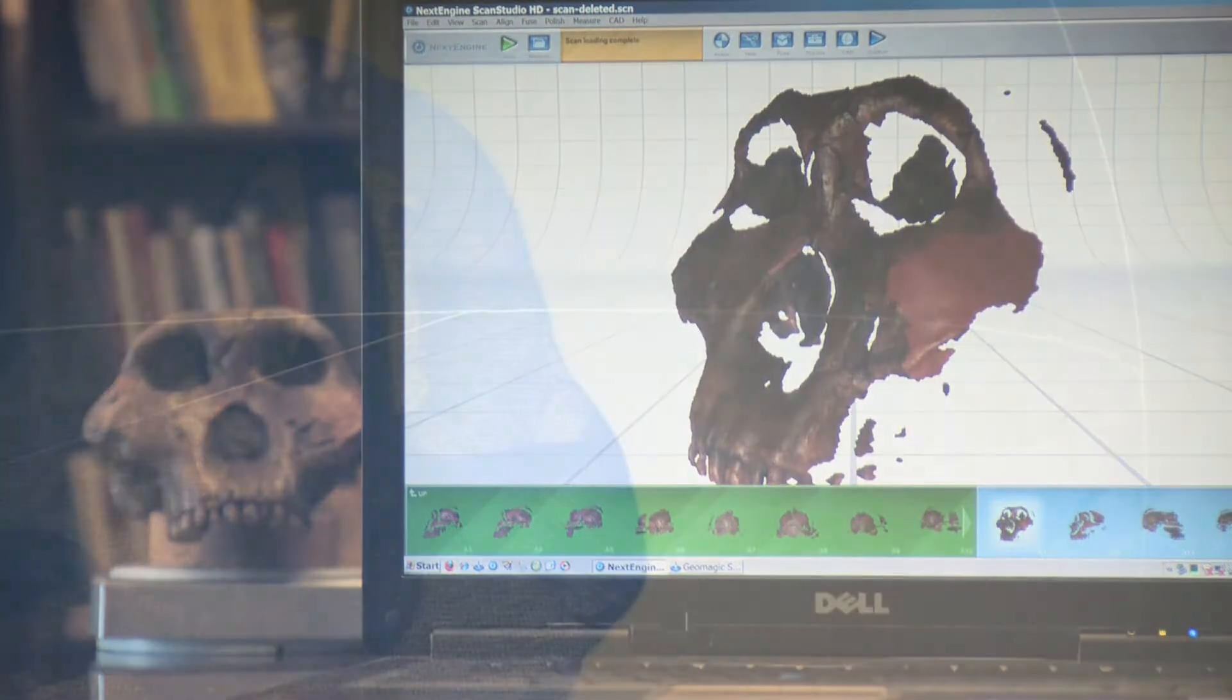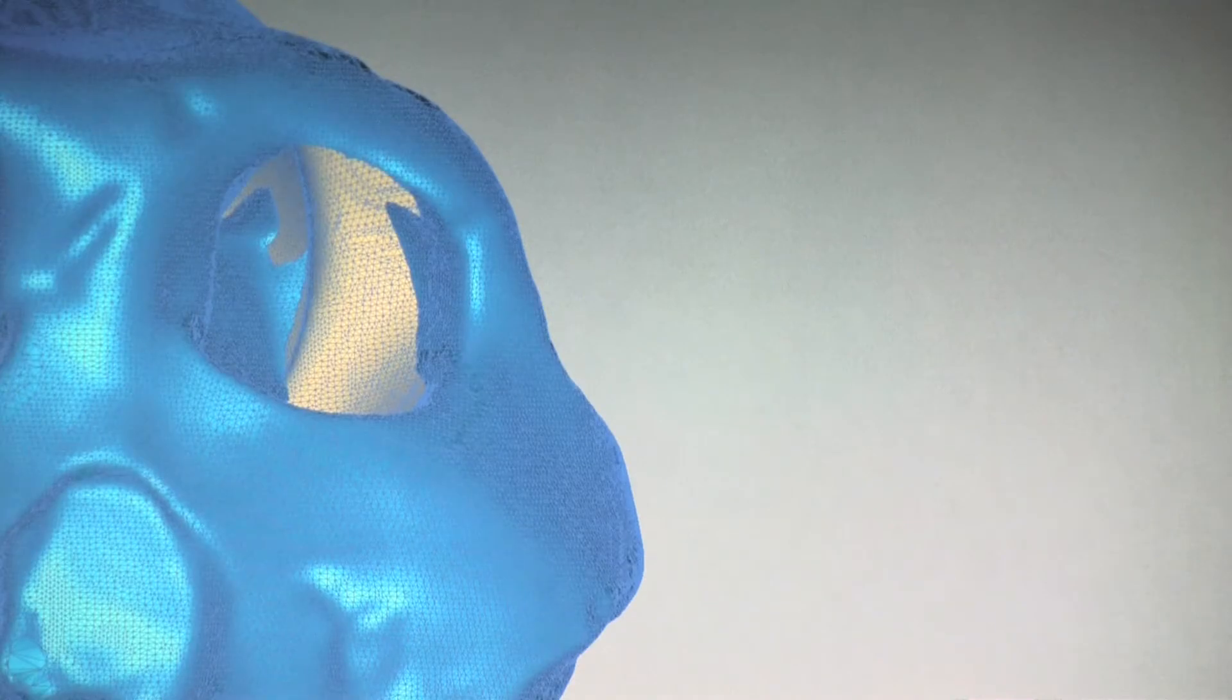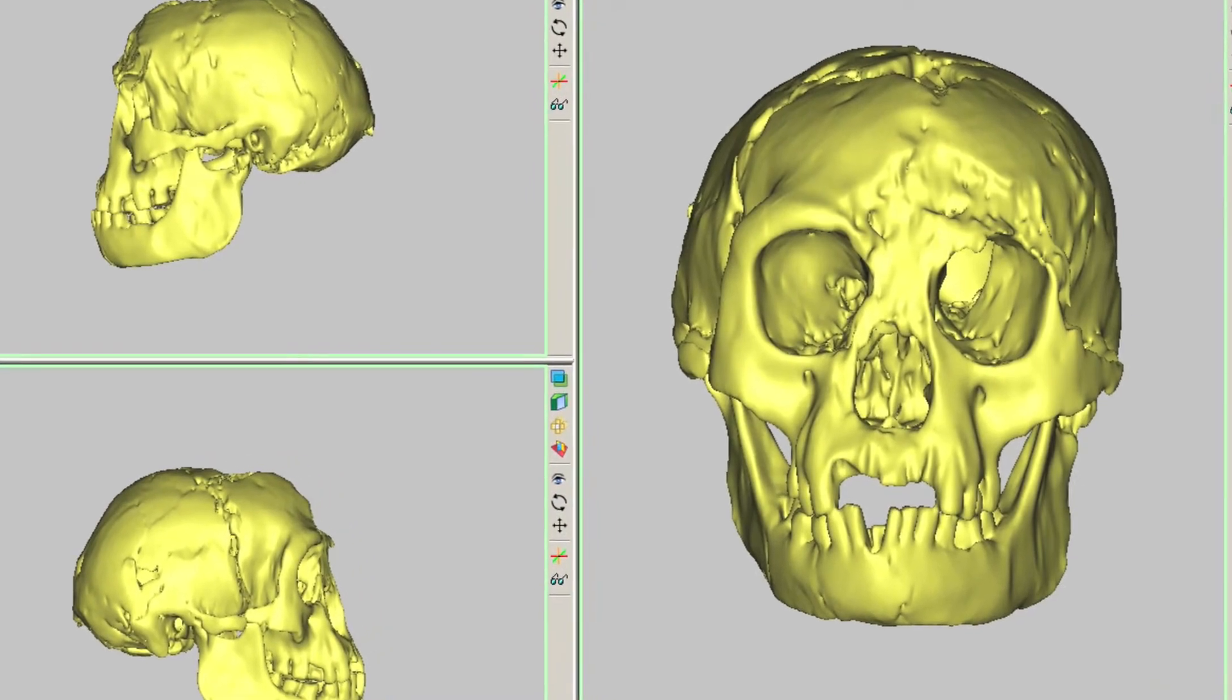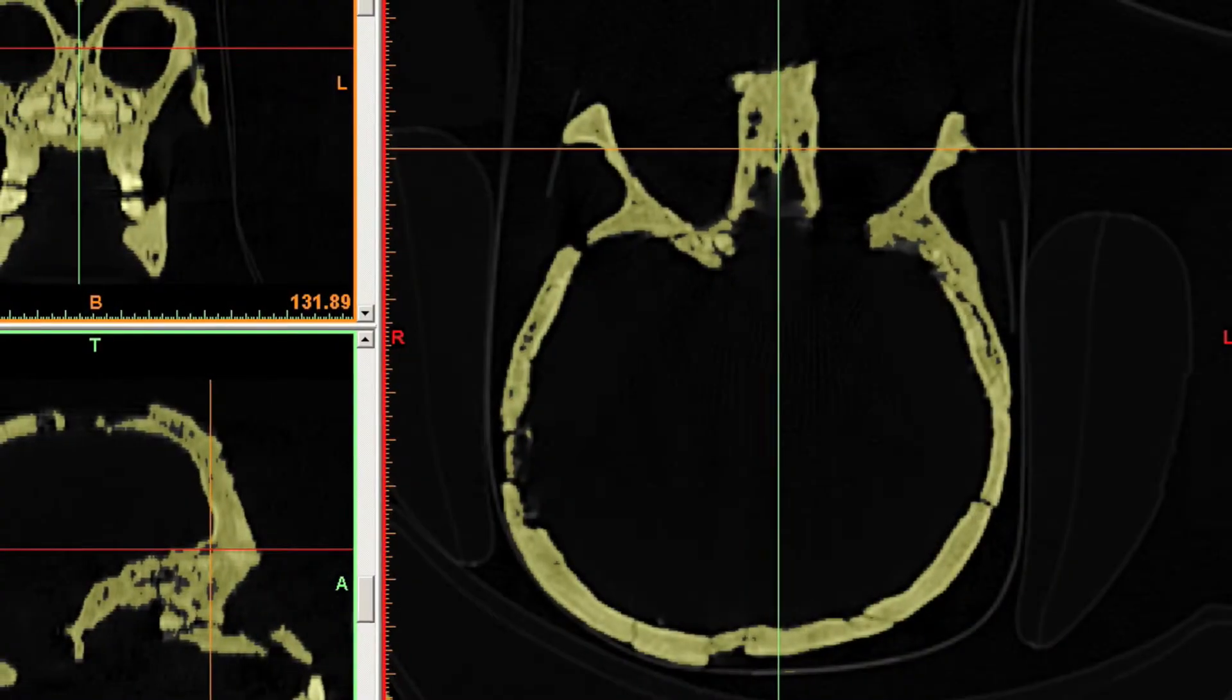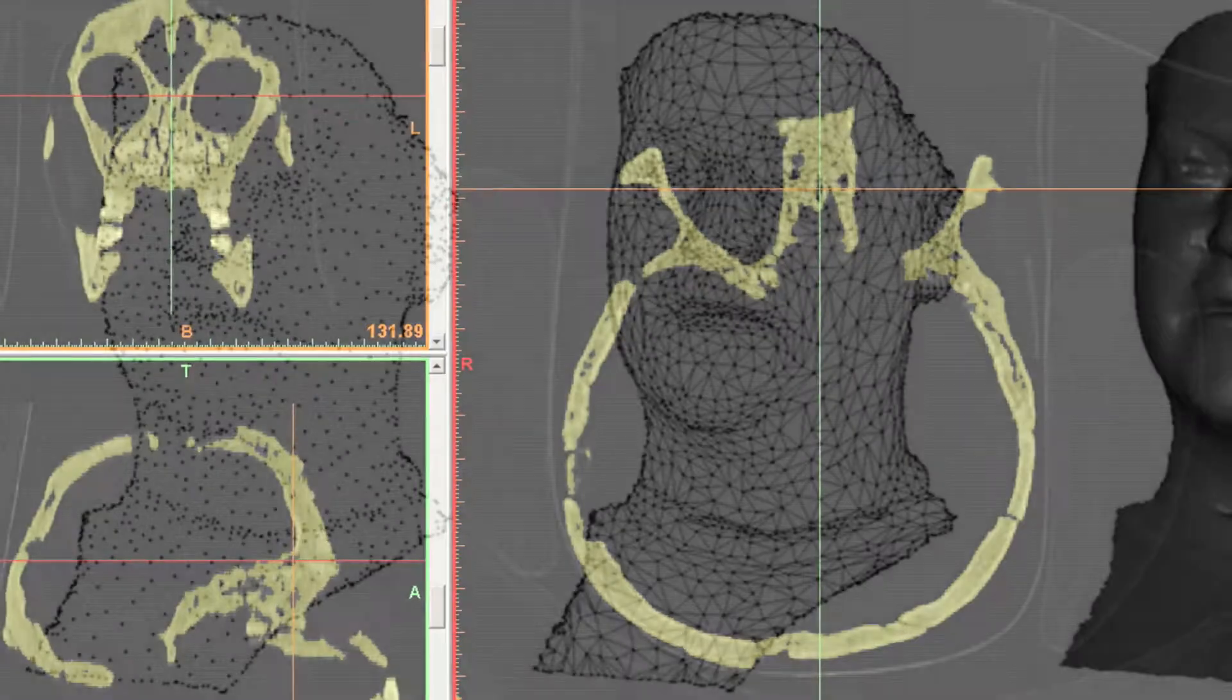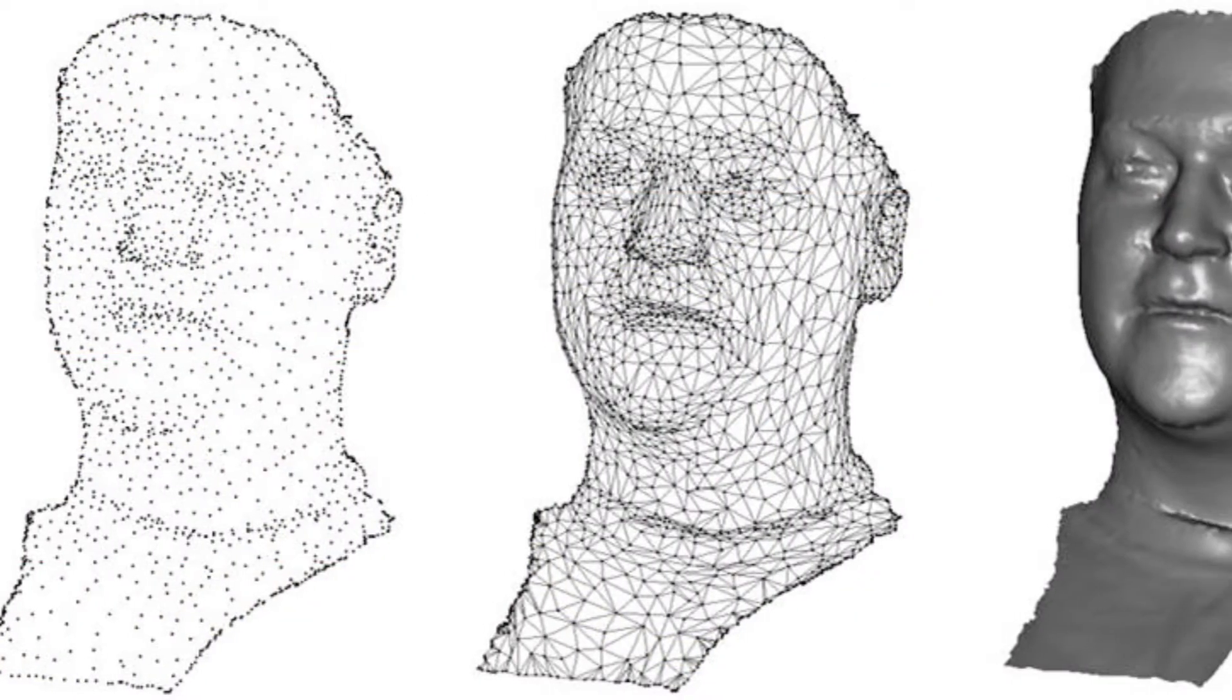I can spin it around, I can take measurements in ways that I can't do on the actual object, and so it really is a liberating ability to be able to take more measurements from the scans without having to handle the object itself anymore. In my research I use it extensively.